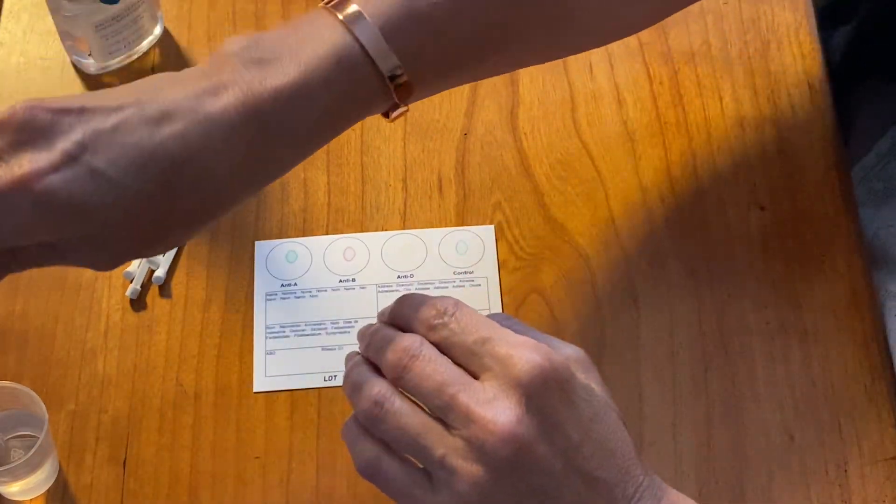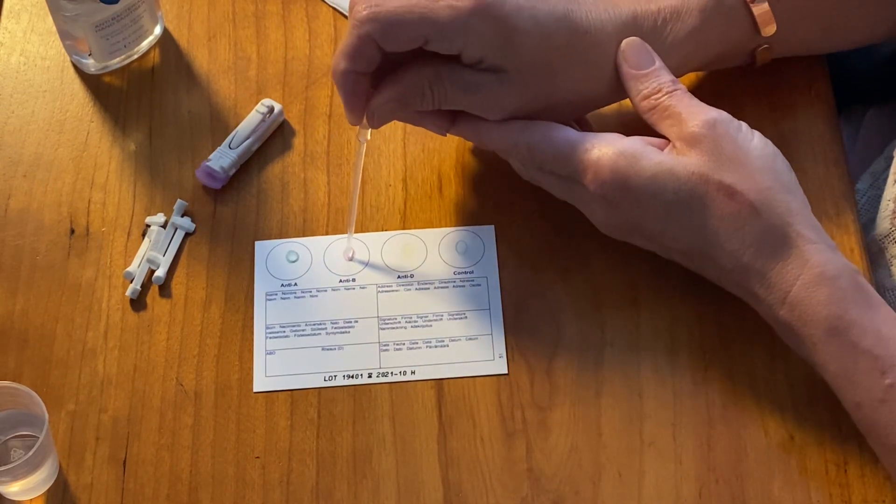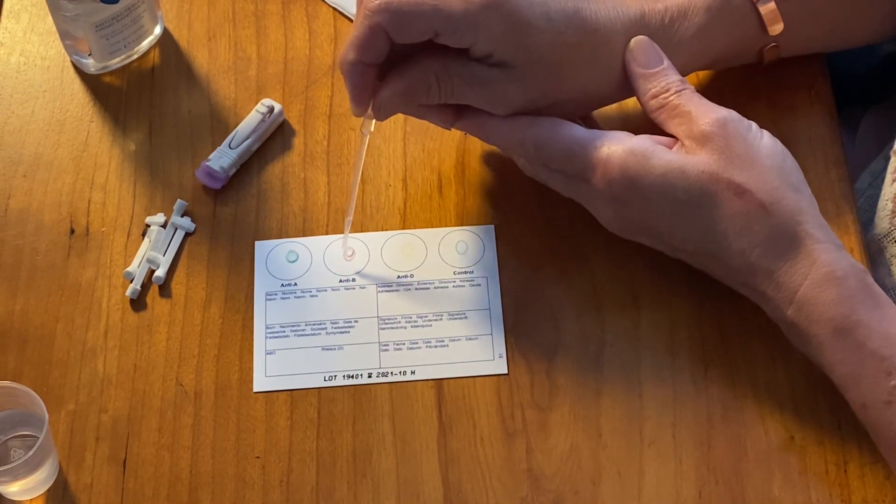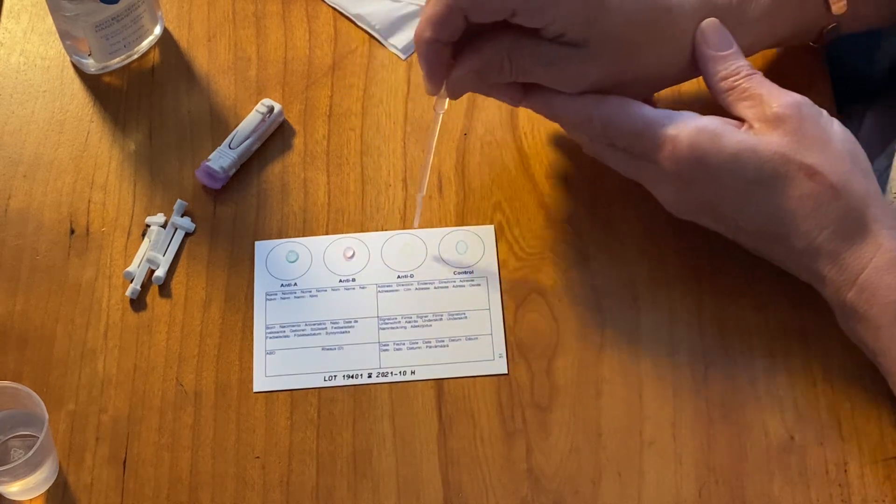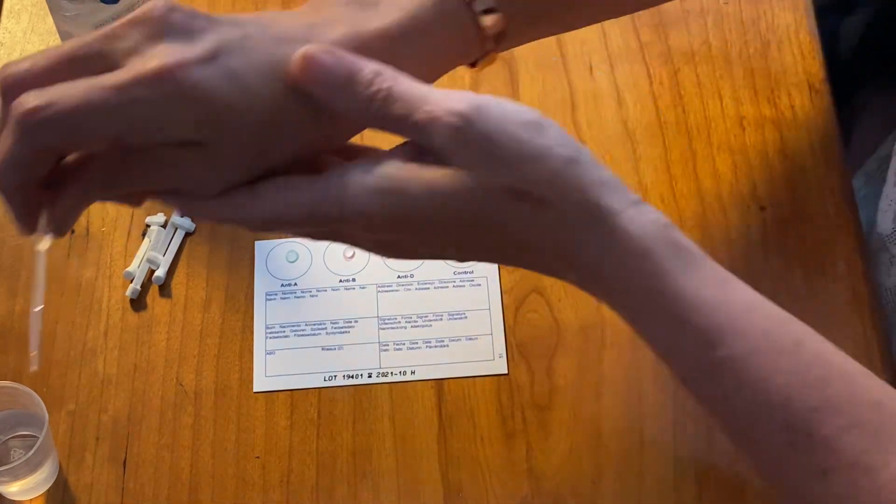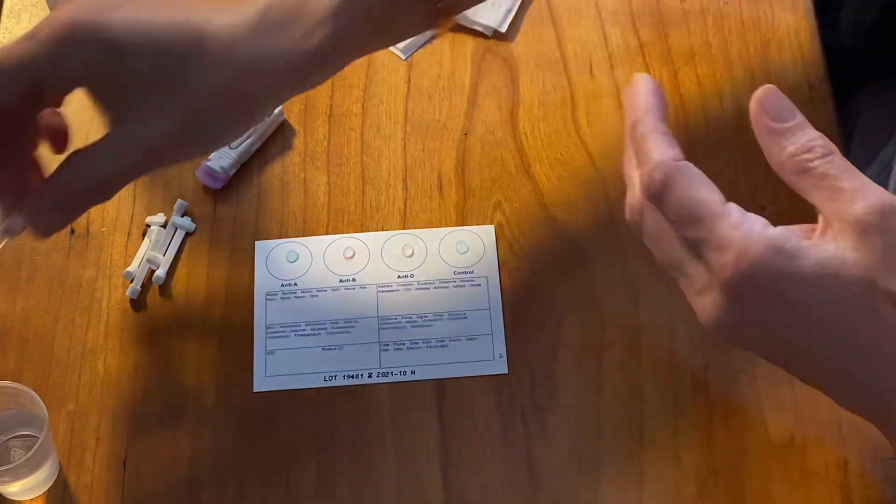To start with, we fill up the plastic dropper with water and put a drop in each of the circles to fill it. Make sure you have enough in. There you go.